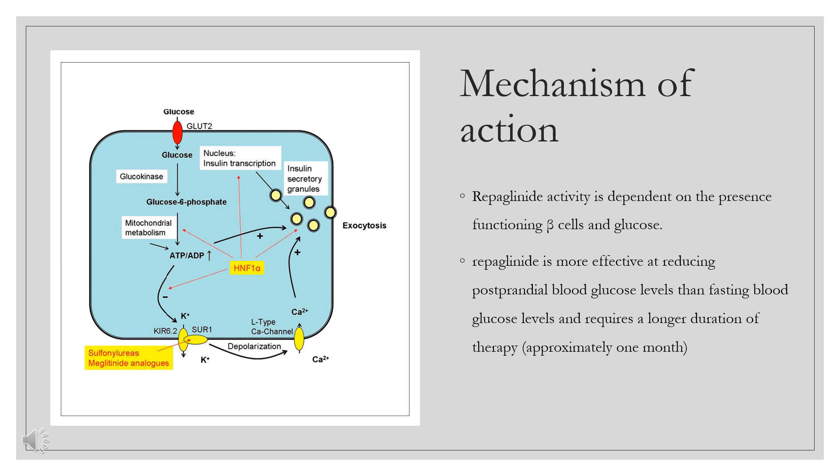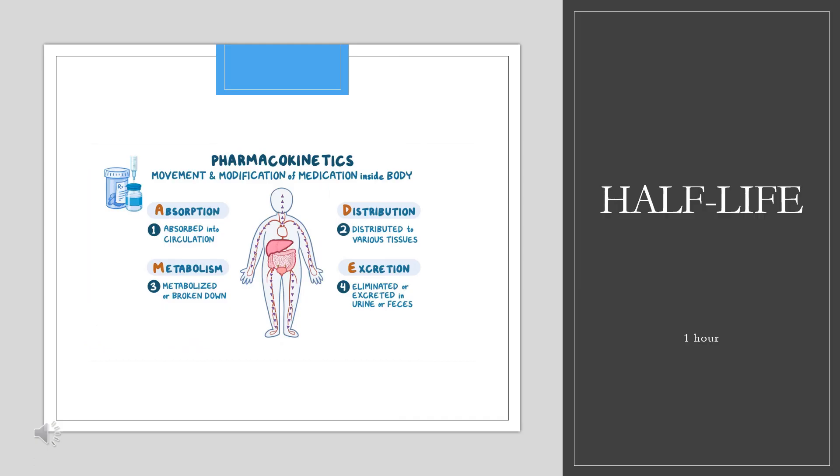Repaglinide appears to be selective for pancreatic beta cells and does not appear to affect skeletal or cardiac muscle or thyroid tissue. Half-life: 1 hour.